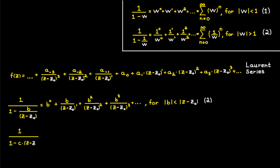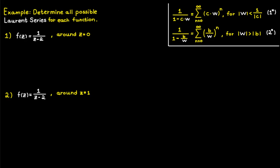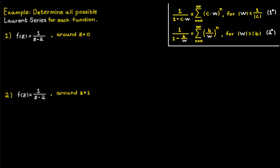For a constant c, inserting c times (c minus c-naught) as w in the first geometric series gives an expansion valid when the absolute value of c minus c-naught is smaller than 1 divided by the absolute value of c. Taking the sum of these two series gives something that looks exactly like our Laurent series, valid inside an annulus determined by our coefficients b and c. In short, by choosing constants b and c smartly, we can create whatever Laurent series we would like.